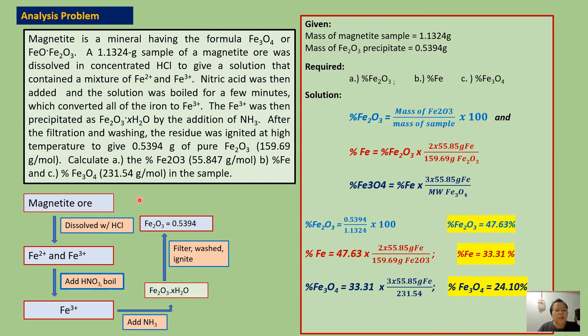So here is the flow diagram of the analysis. We have magnetite ore. We dissolve this with hydrochloric acid, and the resulting solution contains a mixture of ferrous ions and ferric ions. Then we add nitric acid, and then we boil. The purpose of adding nitric acid is to oxidize this ferrous ion into ferric state. So the total ion after oxidation is in the form of ferric ions. Then we add ammonia to precipitate ferric ions as hydrated ferric oxide.